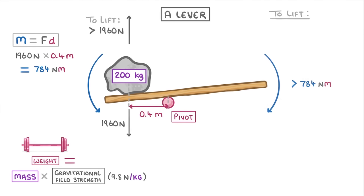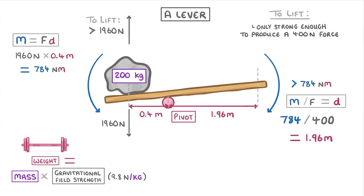This means that all we have to do to lift the rock is generate a clockwise moment that's greater than 784 newton meters. However, if we knew that we were only strong enough to produce a 400 newton force, then we'd have to do a calculation to find out how far from the pivot we had to apply that force. So to find that distance, we need to rearrange our equation to get moment divided by force. This gives us 784 divided by 400, which is 1.96 meters.